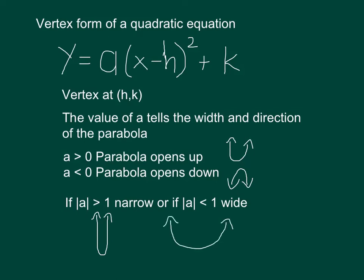So the closer to 0, the wider. The farther away from 0, the narrower. And that's again looking at a.